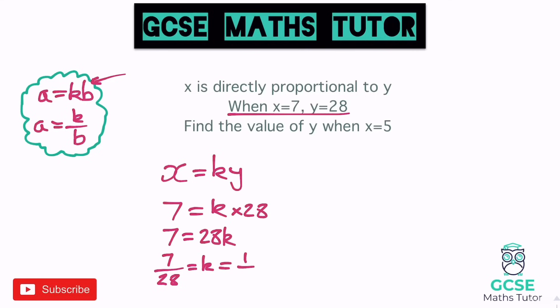So k equals one quarter, or 0.25. Now we can replace k in our formula: x equals one quarter y. In other words, y is being multiplied by a quarter to find x. You can probably see that clearly here since there's nothing else happening to y.